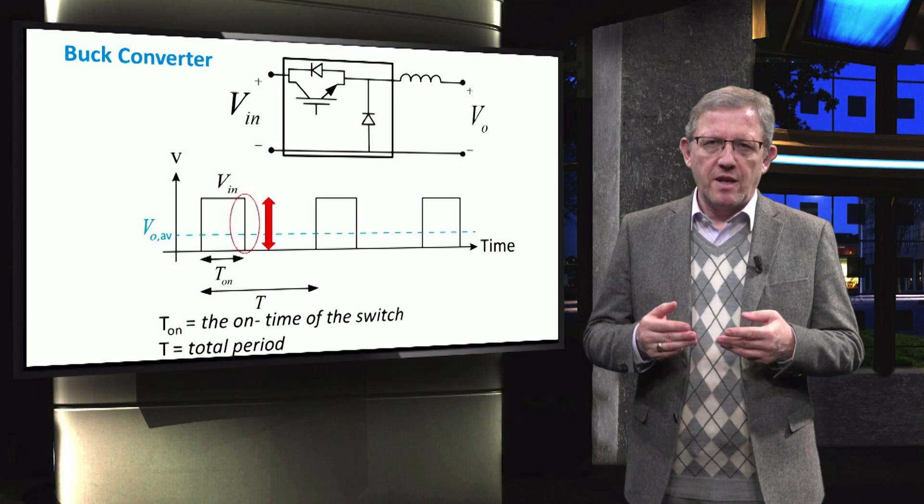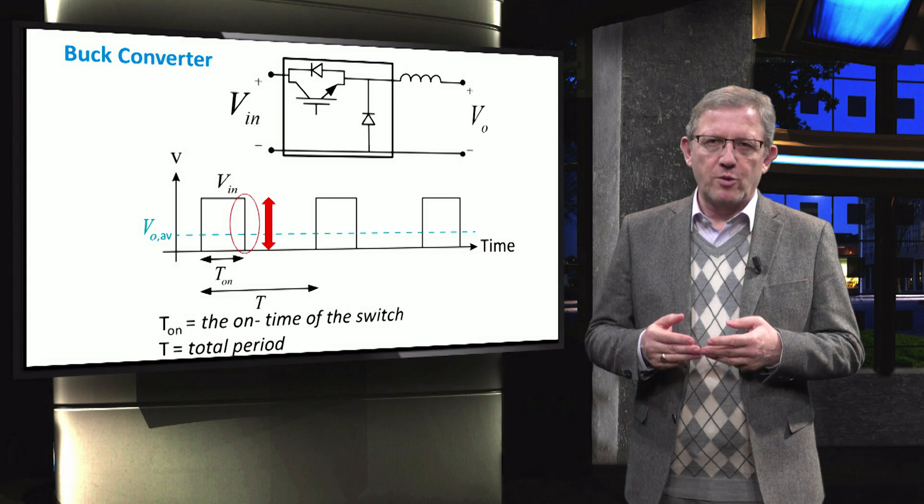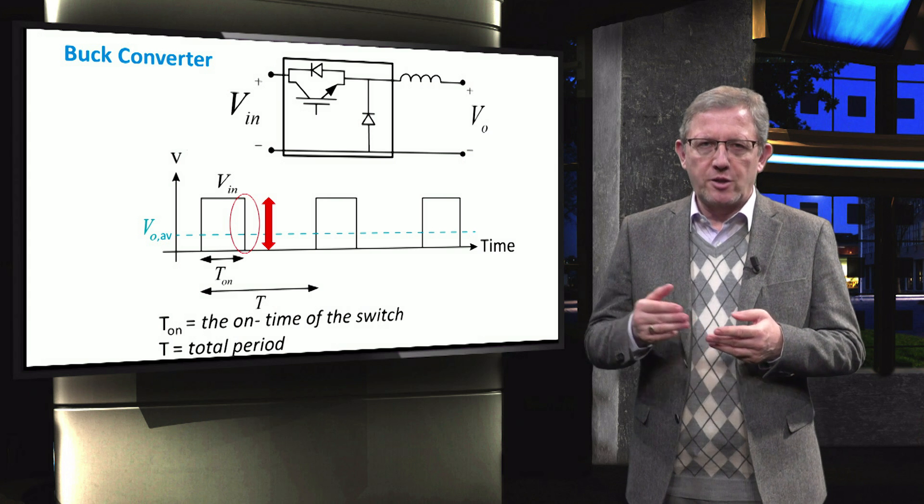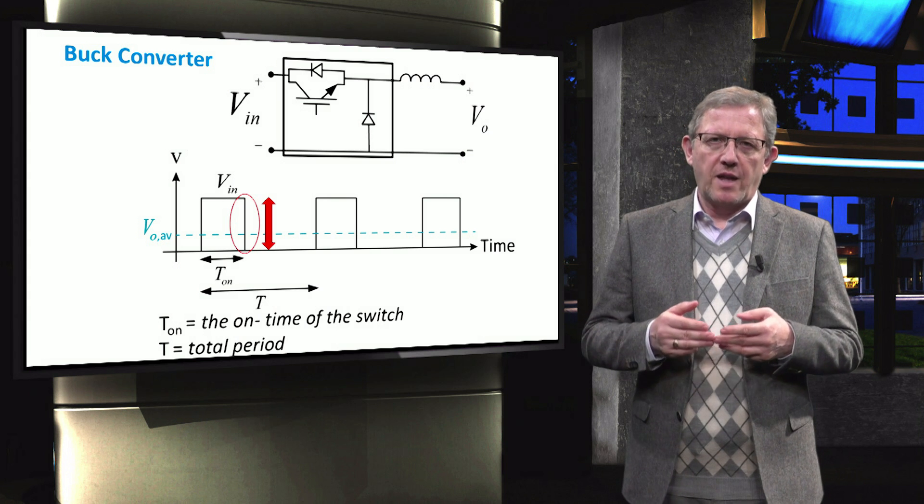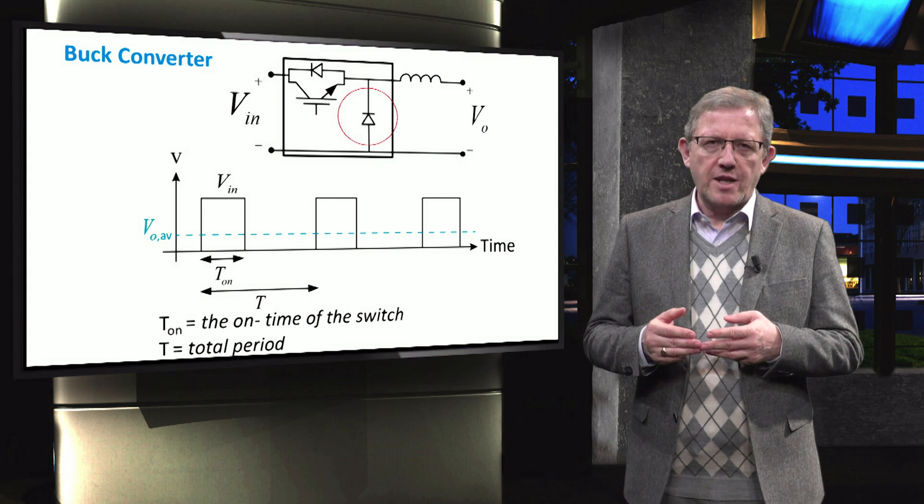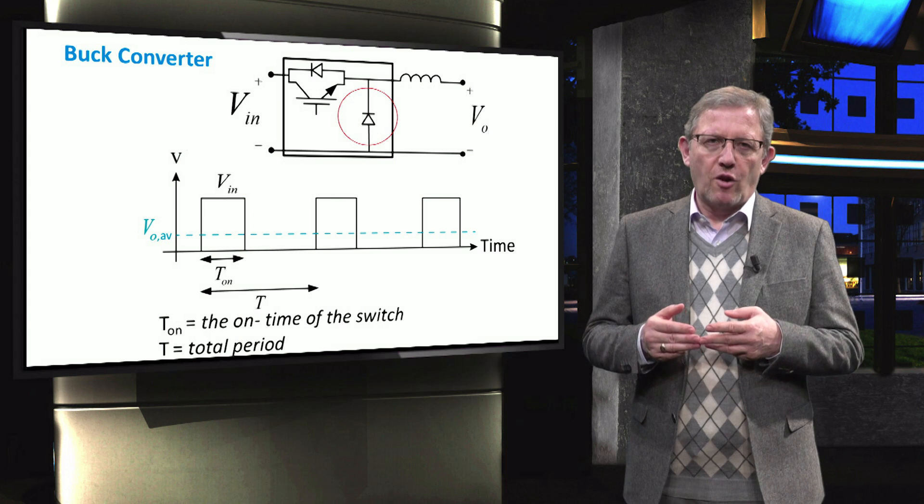As we can see in this figure, the average output voltage V_output_average in the dotted blue line depends on the ratio of on time of the switch and the total period. The diode is called freewheeling diode which takes over the load current in the interval when the switch is off.